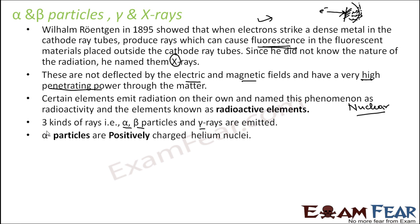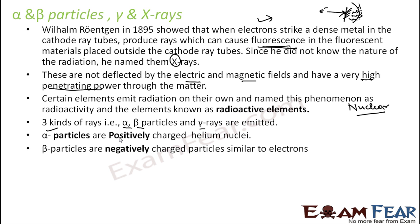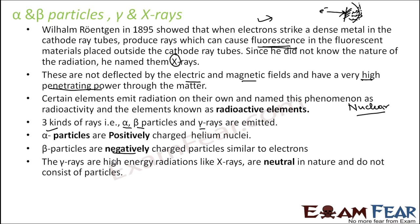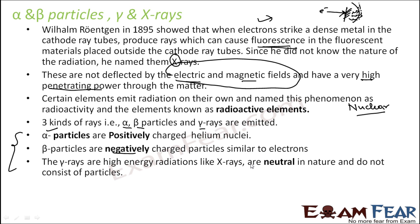There are three kinds of rays: alpha particles, beta particles, and gamma rays. Alpha particles are positively charged helium nuclei. Beta particles are negatively charged particles similar to electrons. Gamma rays are high-energy neutral emissions, similar to X-rays. Please remember: alpha is positive, beta is negative, and gamma is neutral.